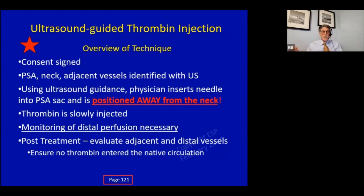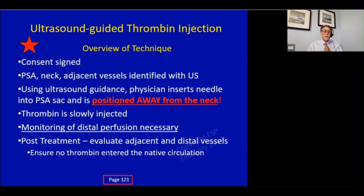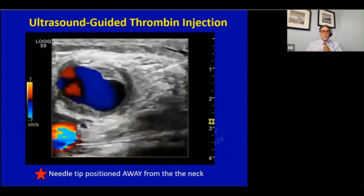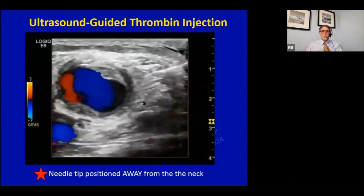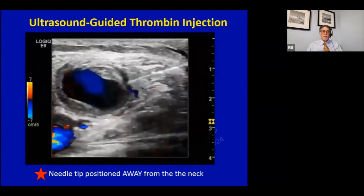This is done by the physician - we are actually just providing guidance. We image the pseudoaneurysm and the neck. The physician inserts the needle into the sac and positions the tip of the needle farthest away from the neck, to minimize the chance that thrombin enters the native circulation. Here you can kind of see the needle coming in from the right into the sac, positioned away from that neck.